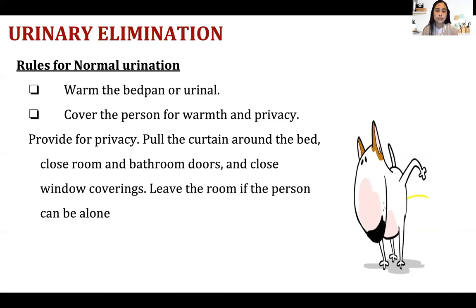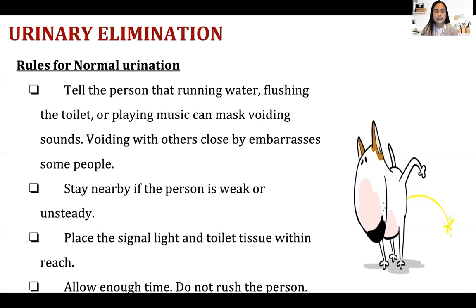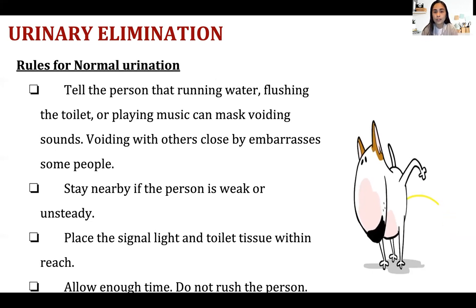Cover the person for warmth and privacy. Some people cannot urinate if someone is looking at them, so always provide privacy. You can tell the person that running water, flushing the toilet, or playing music can mask voiding sounds. Stay nearby if the person is weak or unsteady — if your patient has weakness and wants to stand to urinate, you need to be with them.